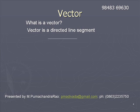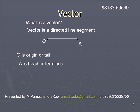A line segment has two end points. Let us name them as O and A. Supposing the initial position is O and the final position is A, then the direction from initial to final is indicated with an arrow. The pointed end of this arrow represents the direction.